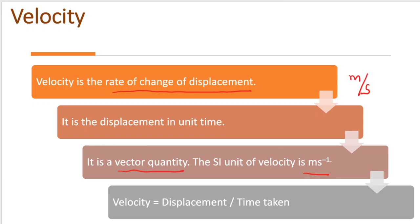Already in part 1 video lesson, we discussed the difference between distance and displacement. Now in this lesson, we are going to discuss about velocity and acceleration. The definition of velocity is: rate of change of displacement. It is the displacement in unit time and it is a vector quantity. Velocity is also a vector quantity, and its unit is ms⁻¹.